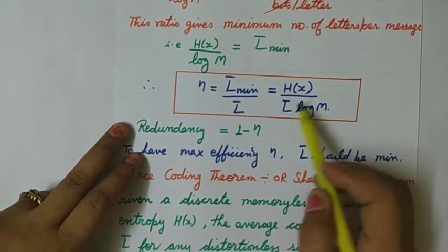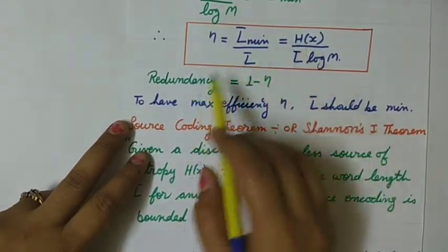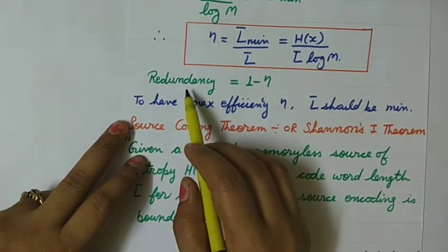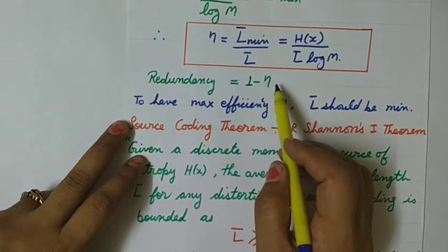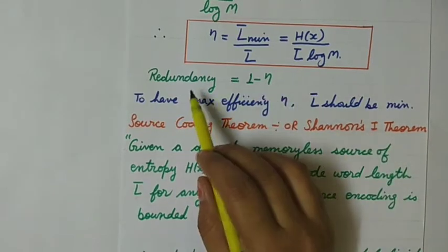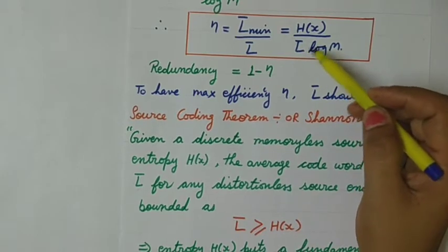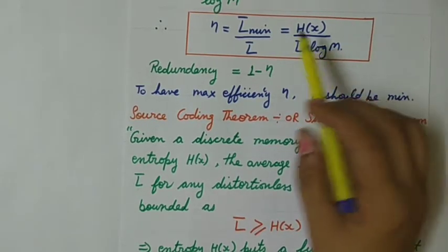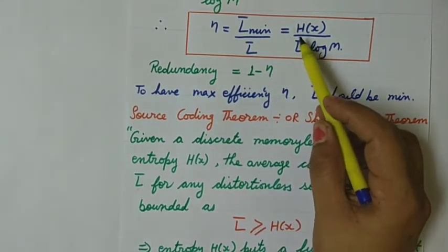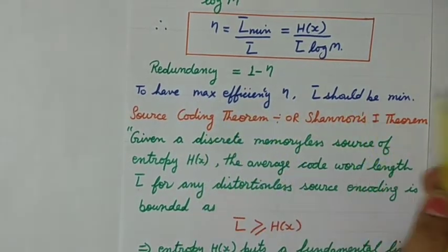The efficiency formula is η = H(X) / (L̄ · log M). Multiplied by 100, it gives percentage efficiency. Redundancy is found by the formula 1 − η, where η is the numerical value not in percentage form. Since L̄ is in the denominator of the efficiency formula, it is clear that to have maximum efficiency, L̄ should be minimum.